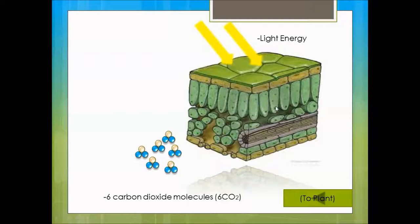Light energy enters the upper epidermis of the leaf. Six carbon dioxide molecules flow around the plant outside in the air and enter through the stomata and into the spongy tissue.